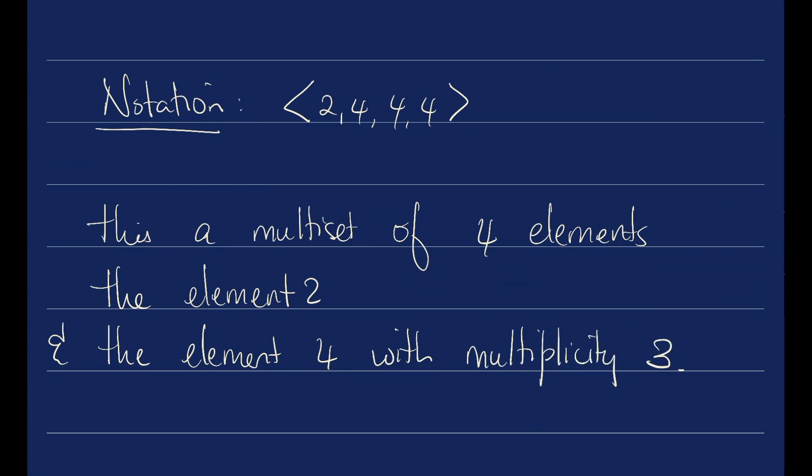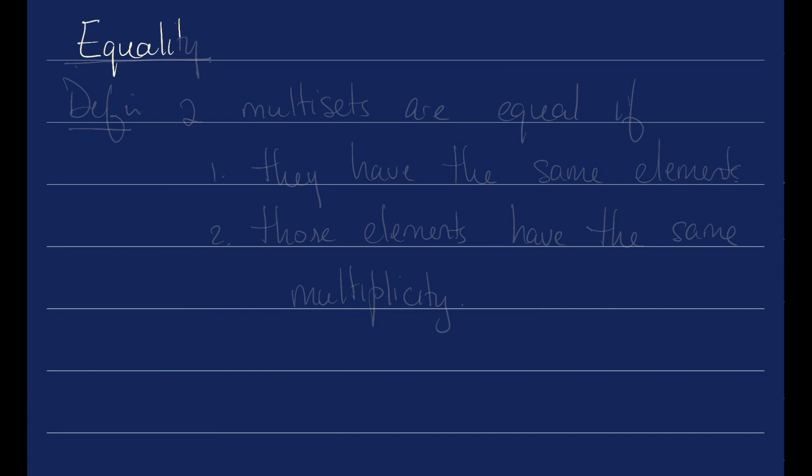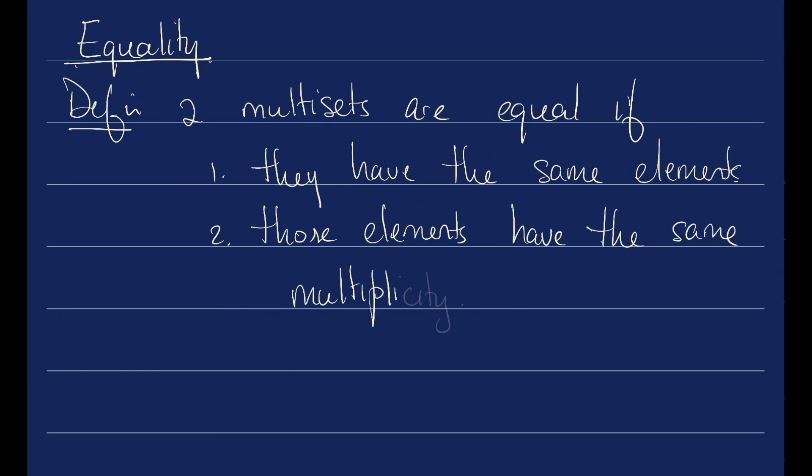Just like with sets and lists, let's talk about when we can say that two multi-sets are equal and when they are not equal. Two multi-sets are equal if they have the same elements and those elements have the same multiplicity.